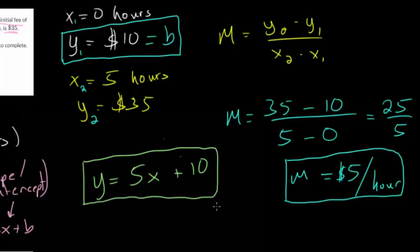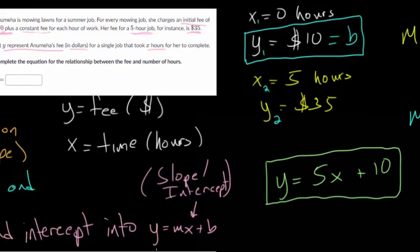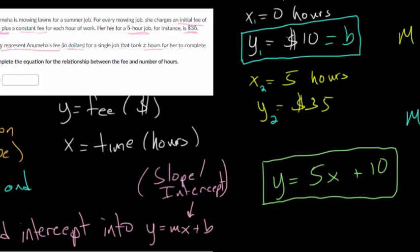Let's just go test it with the information we know. So this first data point, the initial fee of $10. So if she works 0 hours, this goes away, and you just get y equals 10. So that makes sense. And then for the second piece of information, if x is 5, so you plug that in right there, you get 25 plus 10, which is 35. So we do get back that fee of $35. So with this in mind, let's move on to another one.